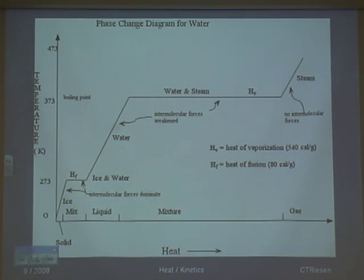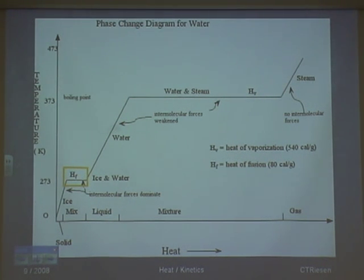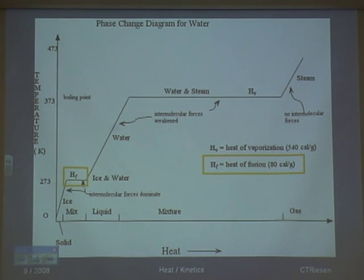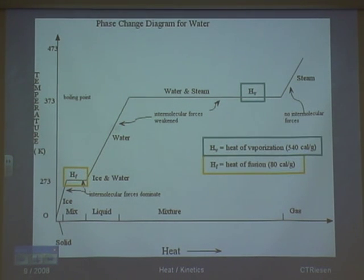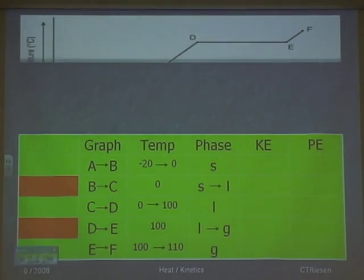There are also special names. The special name for the potential energy when ice melts or when water freezes is heat of fusion — it goes both ways. That value has been determined by scientists as 80 calories per gram, which you can look up on a reference table. From water to steam, or from steam to water, we have what's called the heat of vaporization, H-sub-V, and that value has been determined at 540 calories per gram — also on the reference table.